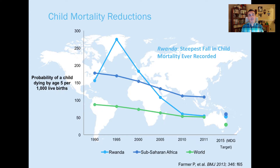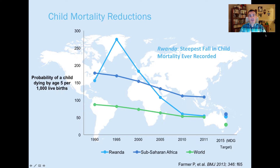Child mortality reductions become an increasingly important measure of health program impact. In our studies throughout this course, we focus on children under five as our key impact indicator. Here are decreases in child mortality in Rwanda (light blue), sub-Saharan Africa (dark blue), and globally (green) over the past roughly 20 years. In 1994-1995, Rwanda had a huge spike — the genocide, where nearly a million people were killed in three months in a country of only about 10 million. But over the past 20 years, Rwanda shows the fastest recorded decline in child mortality anywhere in the world.